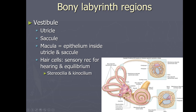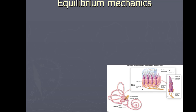The vestibule is used for equilibrium. It has two distinct areas — a utricle and a saccule — but overall it's just called the vestibule. Inside, there's a membrane called the macula, a layer of tissue loaded with little hair cells. Those hair cells have cilia coming off them: many stereocilia and one big cilium called the kinocilium.